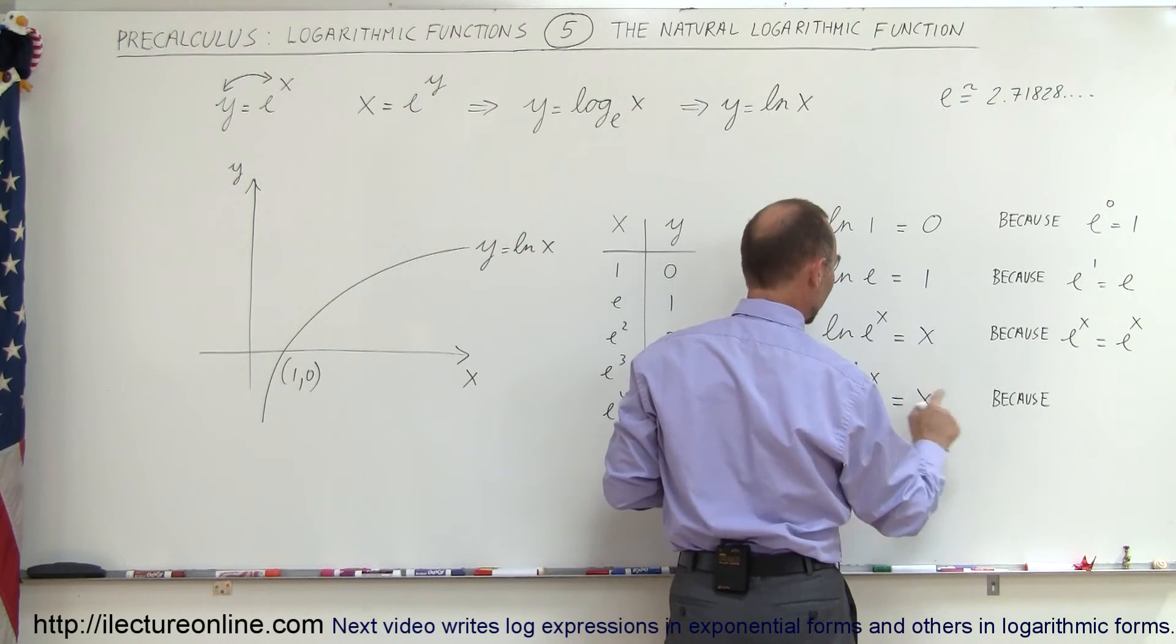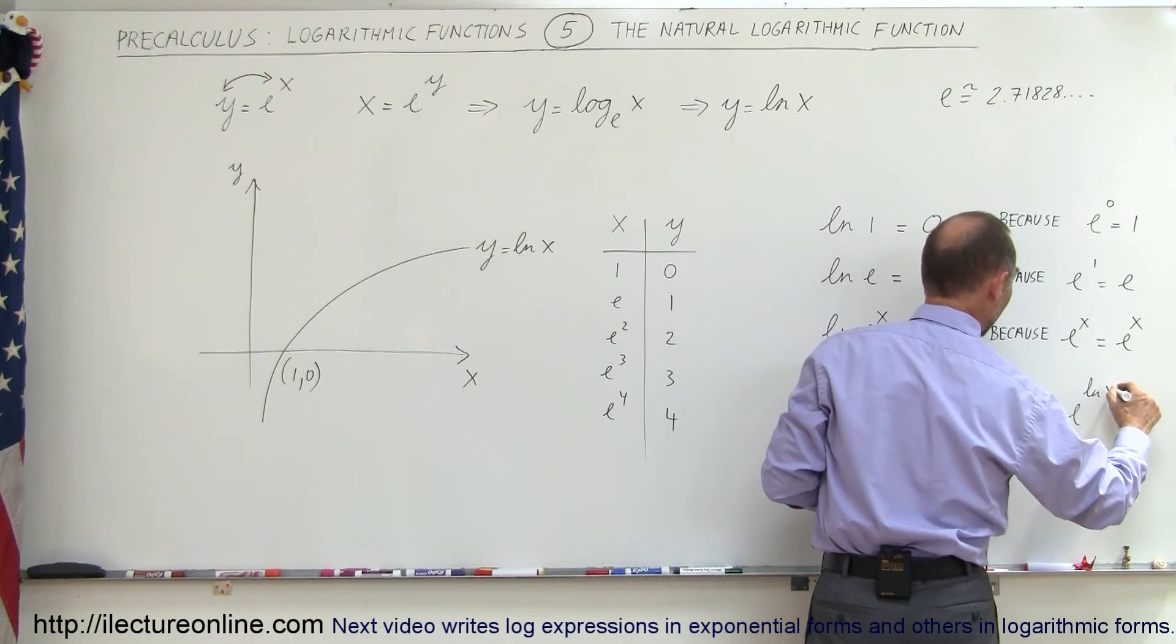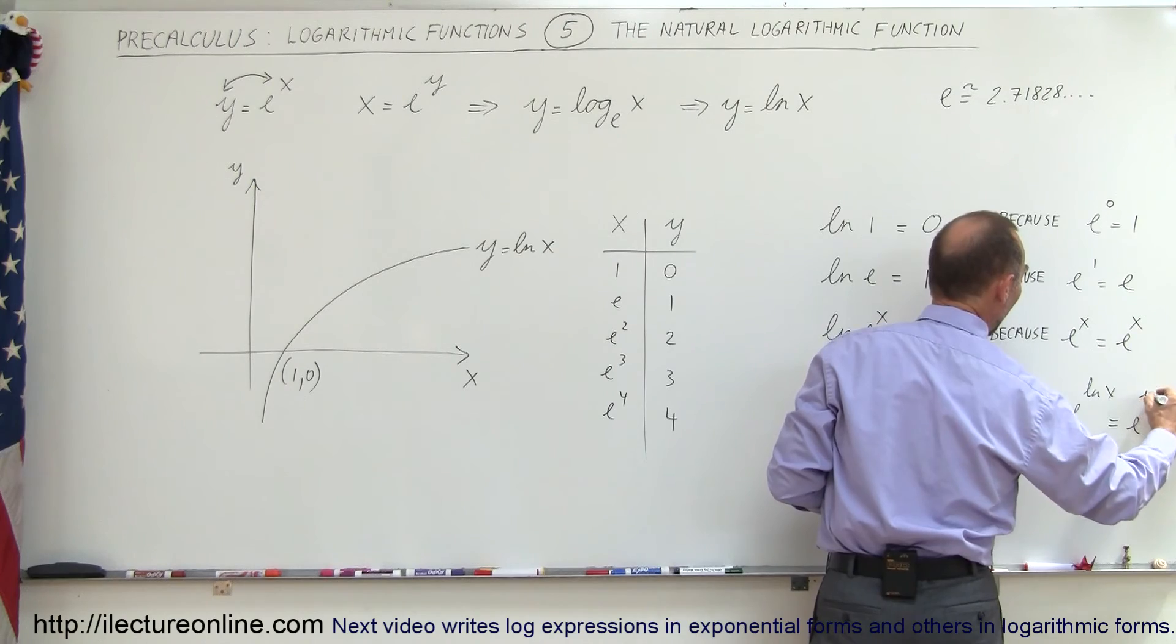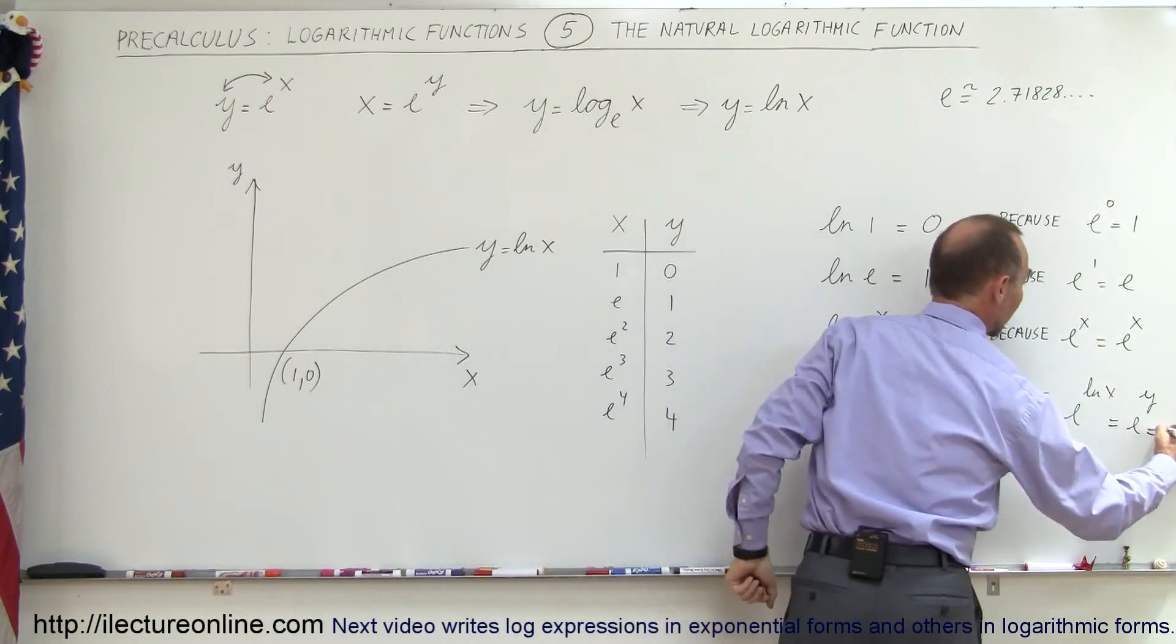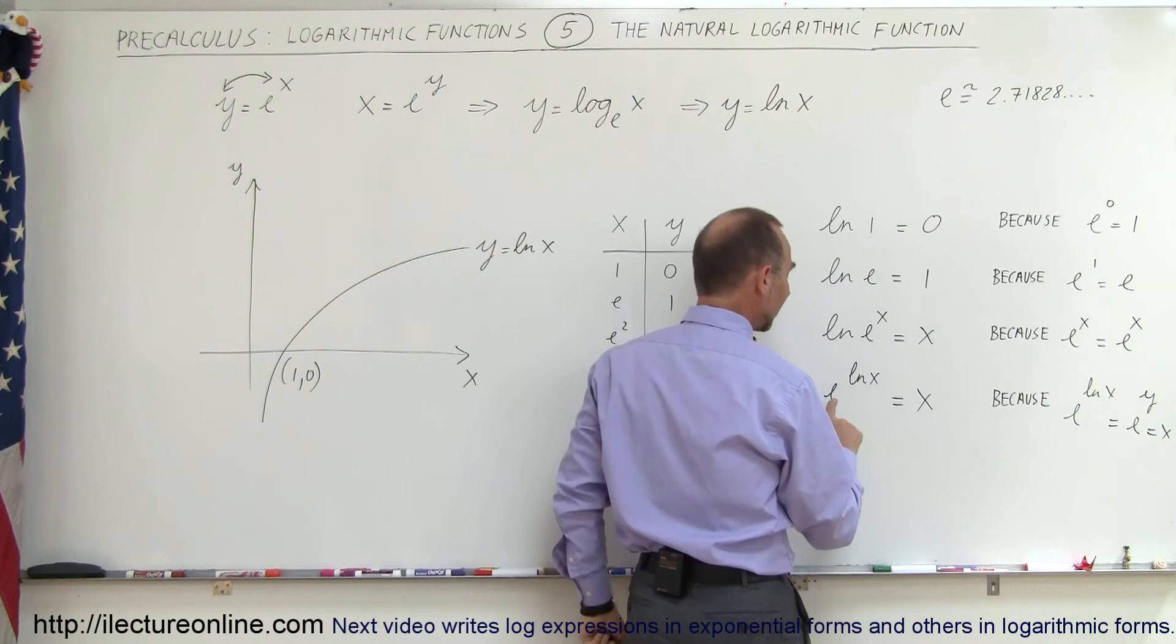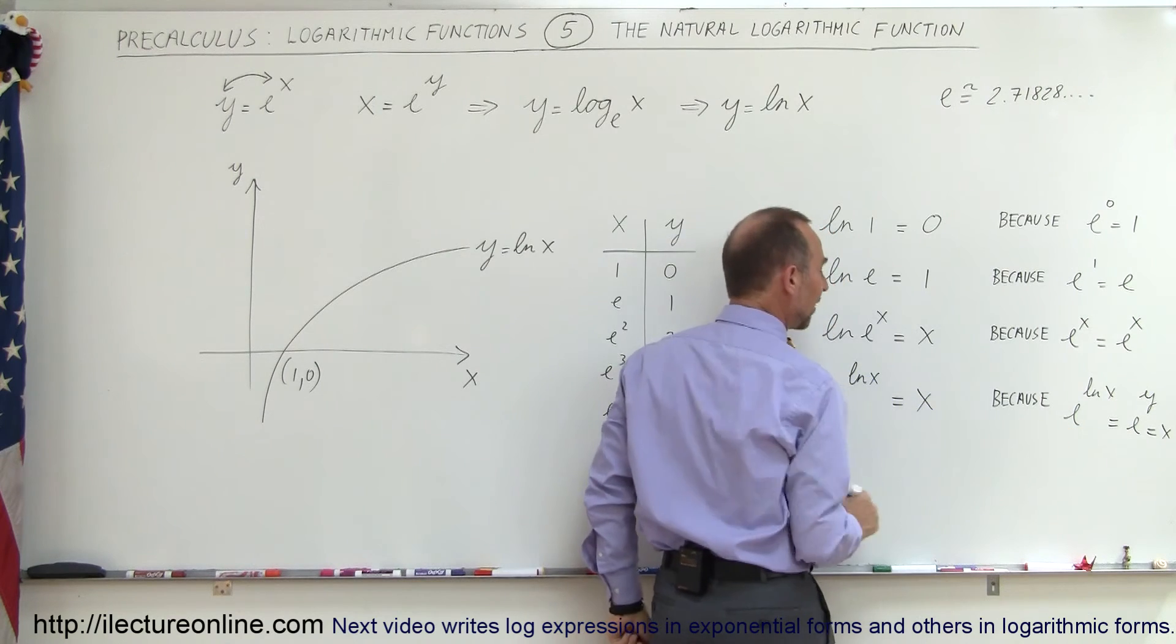So we can say that e to the natural log of x is the same as saying e to the y. And if we come back over here, e to the y is equal to x. And therefore we can say that e to the natural log of x therefore must equal x because that's what we found over here.